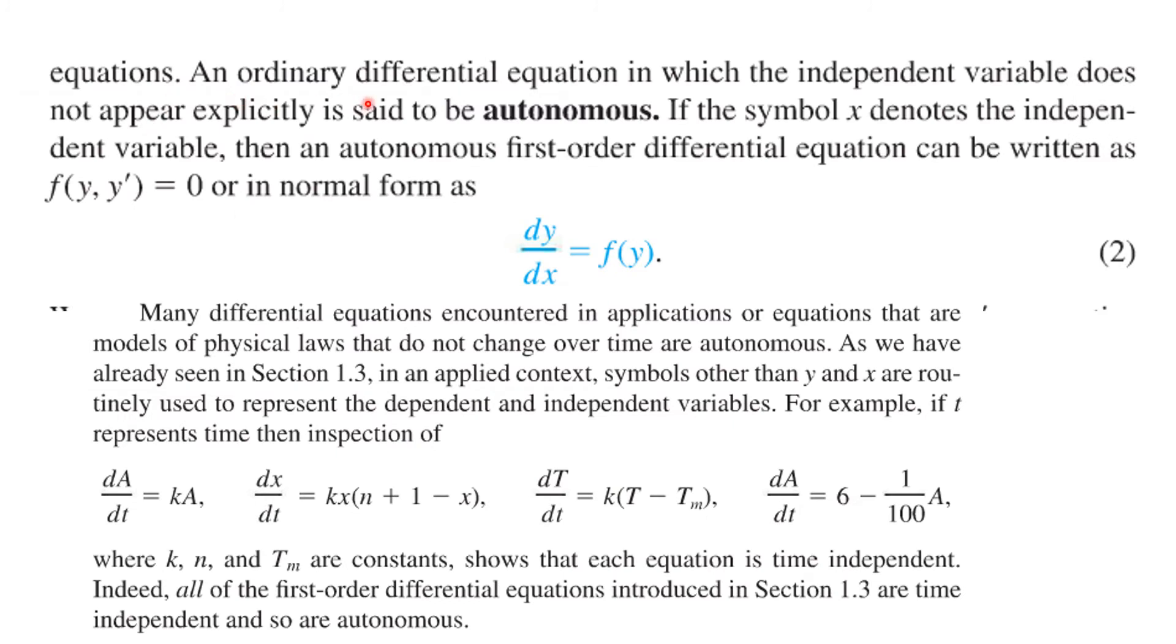An ordinary differential equation in which the independent variable does not appear explicitly is said to be autonomous. If the symbol x denotes the independent variable, then an autonomous first order differential equation can be written as f of y and y prime equals zero or in normal form, dy/dx equals f of y. It only depends on y and we were looking at a couple of those before.